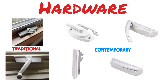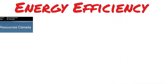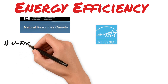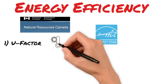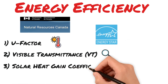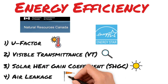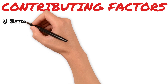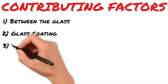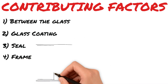Energy efficiency is the most important part of any window. Natural Resources Canada runs the Energy Star program, which sets out standards for Canadian windows. There are four measurements that determine energy ratings: U-factor, visual transmittance, solar heat gain coefficient, and air leakage. The basic contributing factors are: what gets put between the glass, what coatings are used on the glass, how tightly the window locks and seals, and whether the frame works to keep the air conditioning and heat where it's supposed to be.